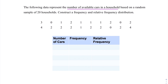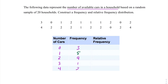Continuing with the example, we have a table with headings: number of cars, frequency, and relative frequency. The number of cars represents our categories — 0, 1, 2, 3, or 4 cars. For the frequency, we add up how many times we see each value. We see three 0s, so the frequency is 3. Following that same logic, we have five 1s, nine households with two cars, one household with three cars, and two households with four cars.